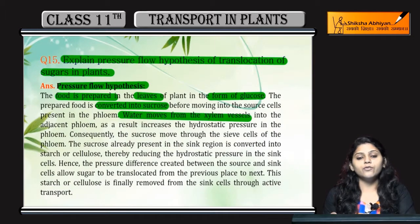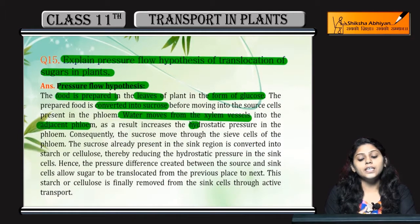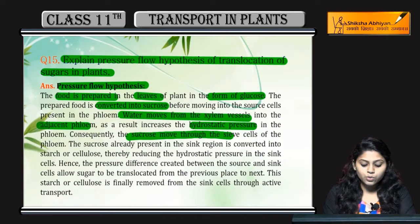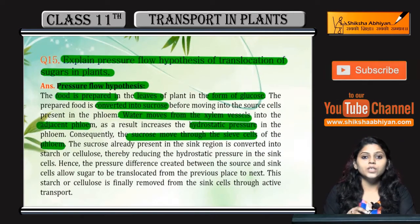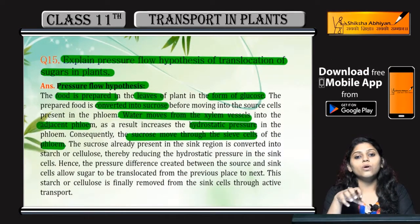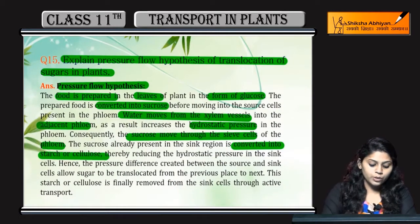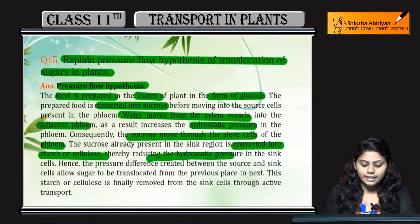Water move karta hai from xylem vessel to the adjacent phloem. Phloem ki wajah se hydrostatic pressure in the phloem increases and builds up. Sucrose move karta hai through the sieve cells of the phloem. Or jo sucrose already sink me present hai, woh convert hota hai into starch or cellulose, jis ki wajah se hydrostatic pressure in the sink cell decrease ho jata hai.